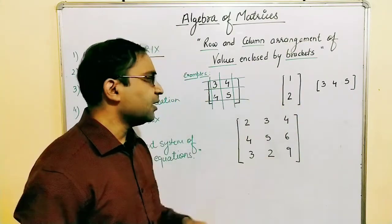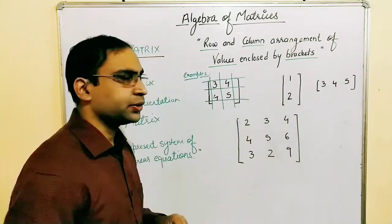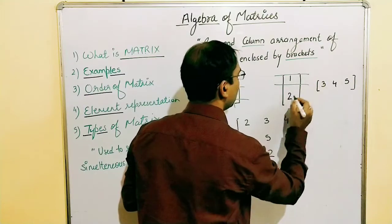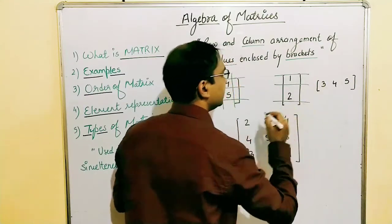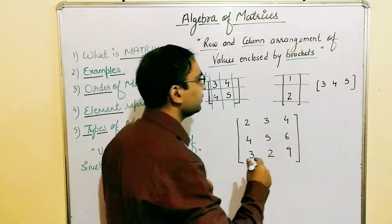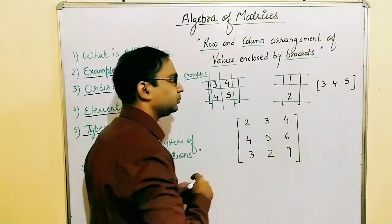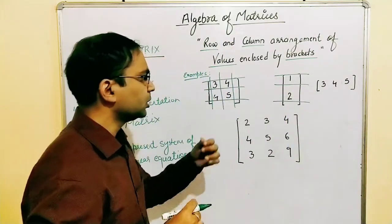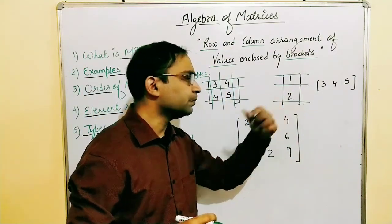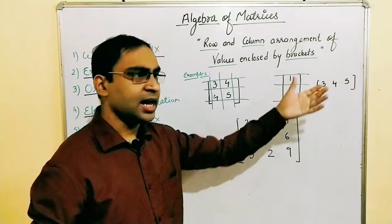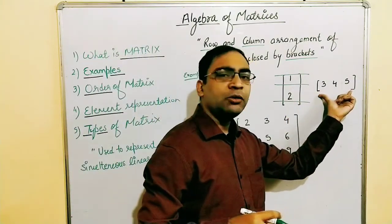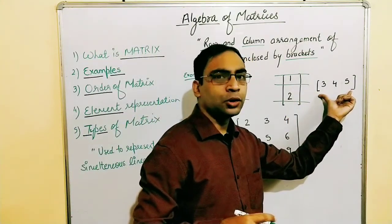Let's see another example. We have two rows here — this is one row and this is the second row — and how many columns? We have one column. So this is a matrix with two rows and one column.